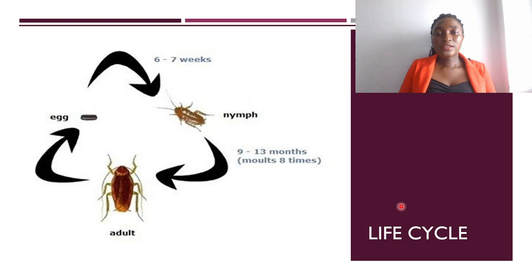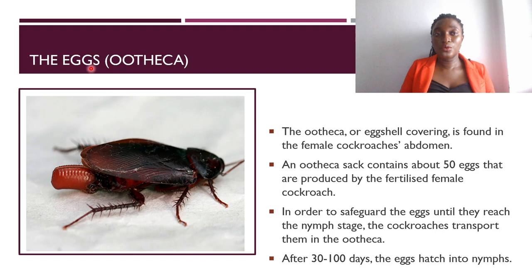The life cycle, being that of incomplete metamorphosis, has the adults laying eggs, the eggs maturing into the nymphs, and then the nymphs maturing into the adults, and then the cycle repeats itself.